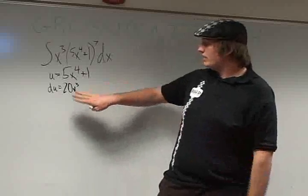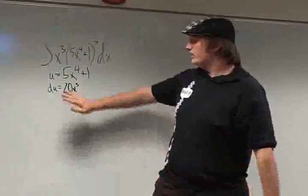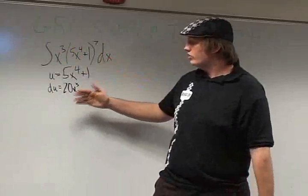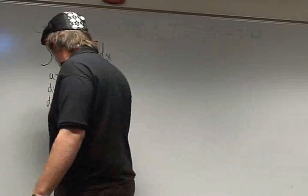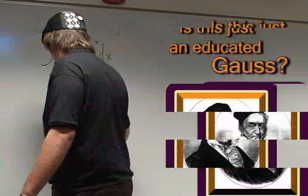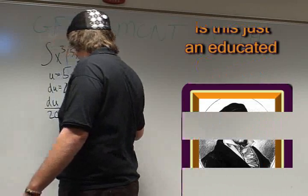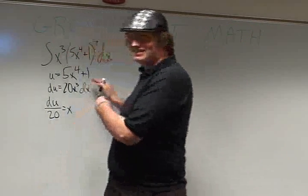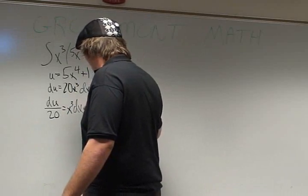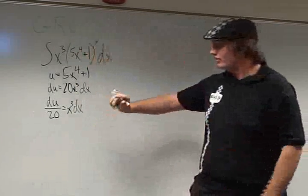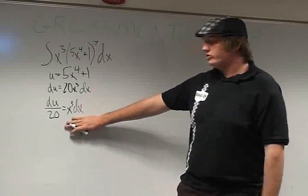Now we want to make du match up top, so we want to make this match x cubed dx. All we've got to do is take 20 out, add the dx in there. Ta-da. So now we have du over 20 equals x cubed dx.